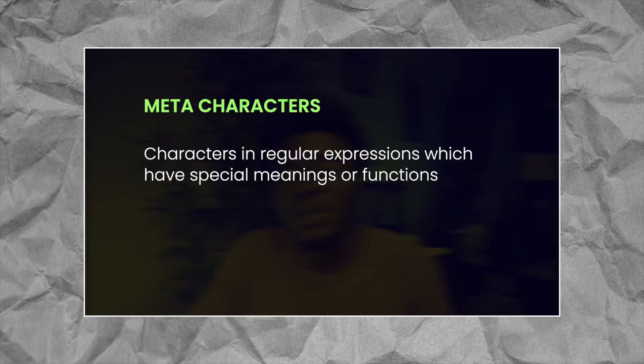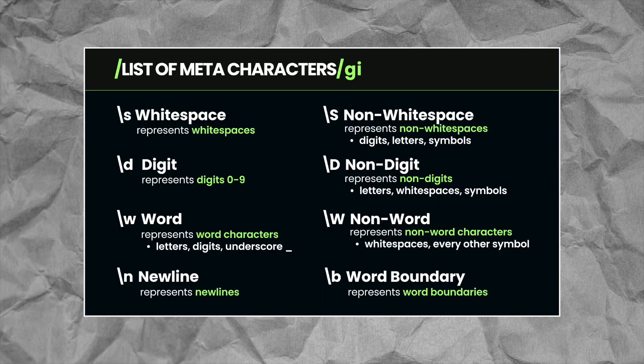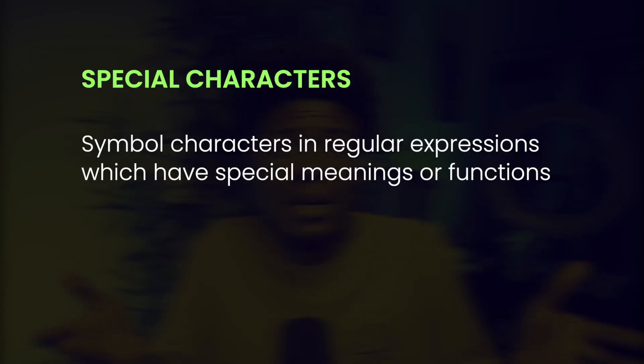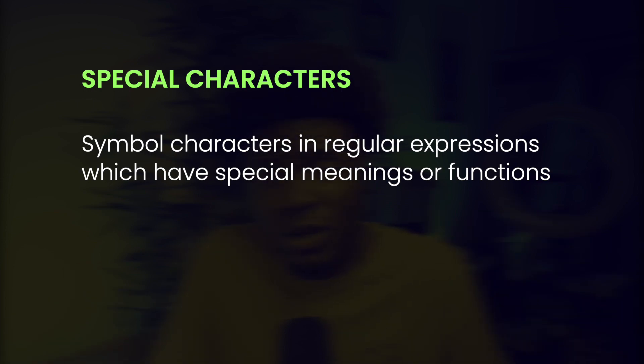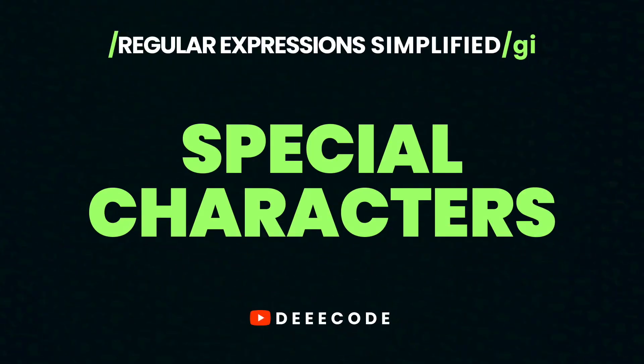In this lesson, I'll be simplifying special characters in regular expressions. In the previous lesson, we looked at meta characters, which have special meanings or functions in regular expressions and are made up of two characters — a backward slash and a character. We also have special characters, which have special meanings but are made up of just one character. In this lesson, we'll look at some of the most common special characters in regular expressions, which you can use in different programming languages.